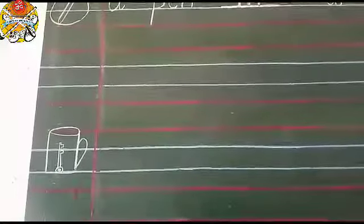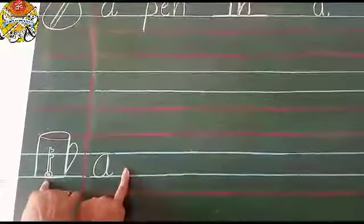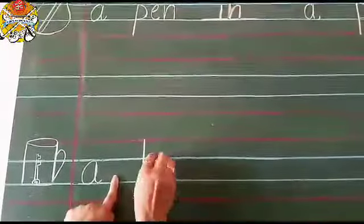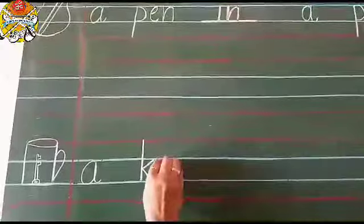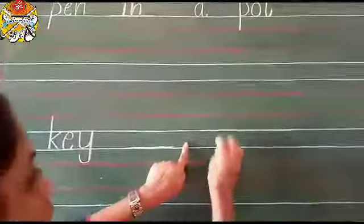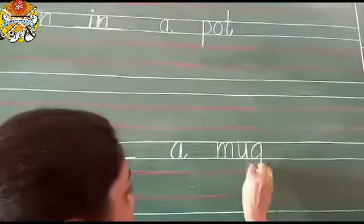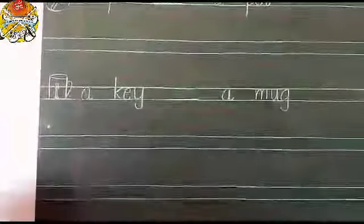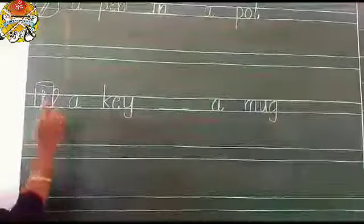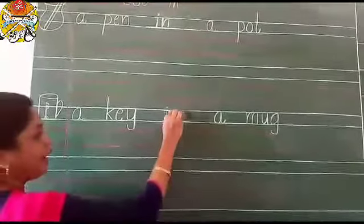Now we will write the sentence. Write: A — one finger space — K-E-Y, key — one finger space — dash — one finger space — A — one finger space — M-U-G, mug. Where is a key? A key in a mug. So we will write: a key is in a mug.